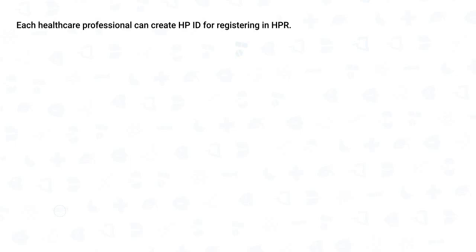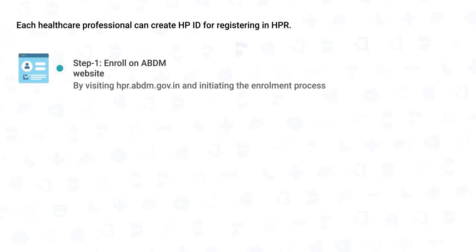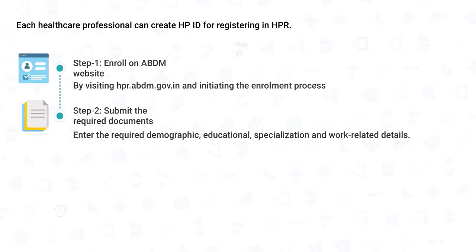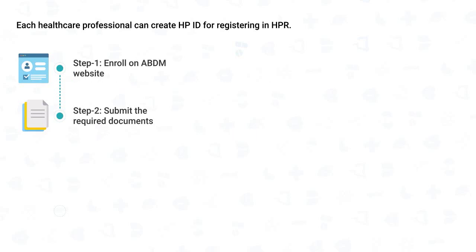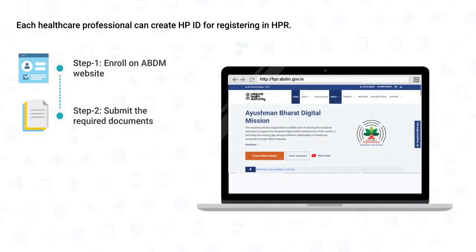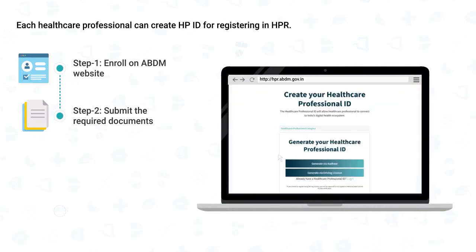Healthcare professionals can generate their Healthcare Professional ID, or HPID, for registering in HPR by following two simple steps. First, enrolling on the ABDM website by visiting hpr.abdm.gov.in and initiating the enrollment process, then submitting the required demographic, educational, specialization, and work-related details. Visit hpr.abdm.gov.in, click on the link for registering a new HPID, and select Aadhaar or driving license to generate the ID.